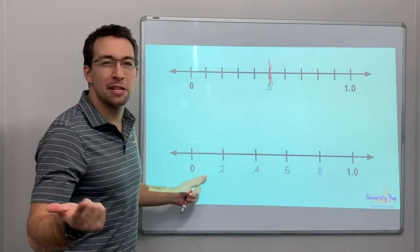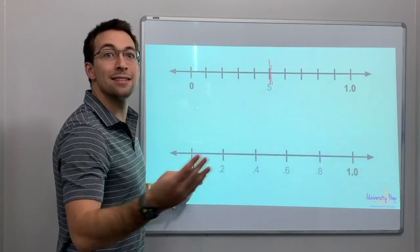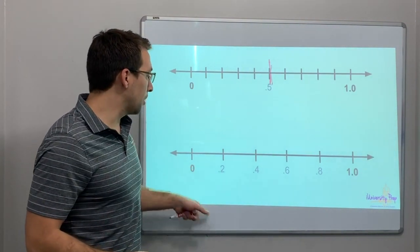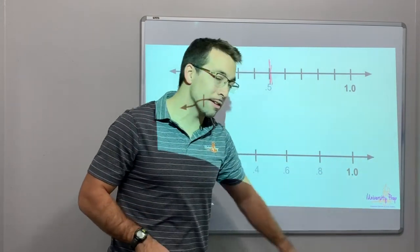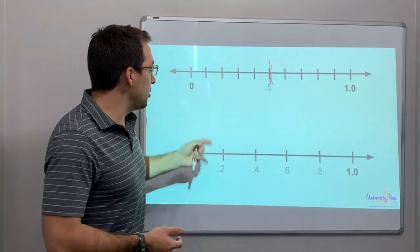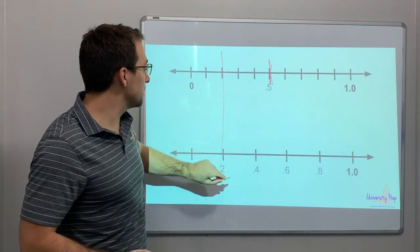And then we'll count with dimes, right? Because a dime is one tenth of a dollar. So 0, 20 cents, 40 cents, 60 cents, 80 cents, a dollar.